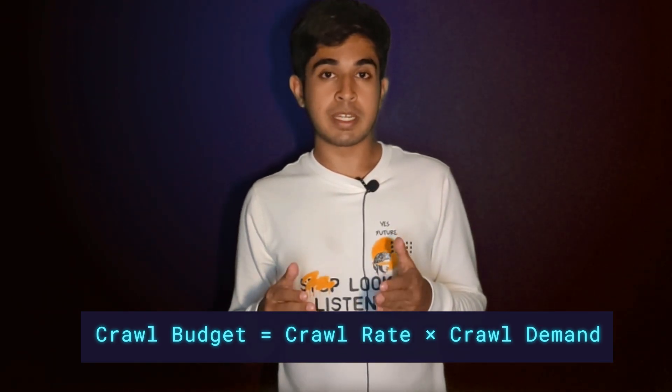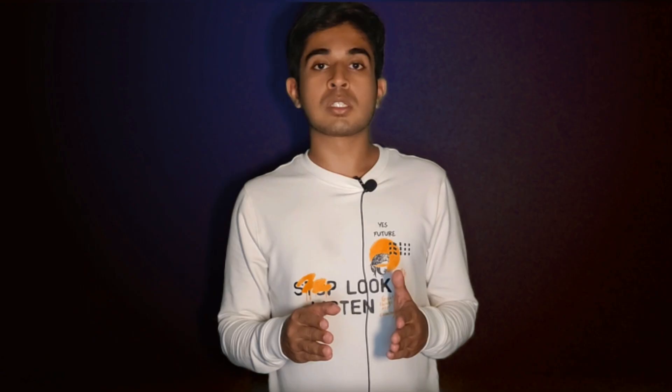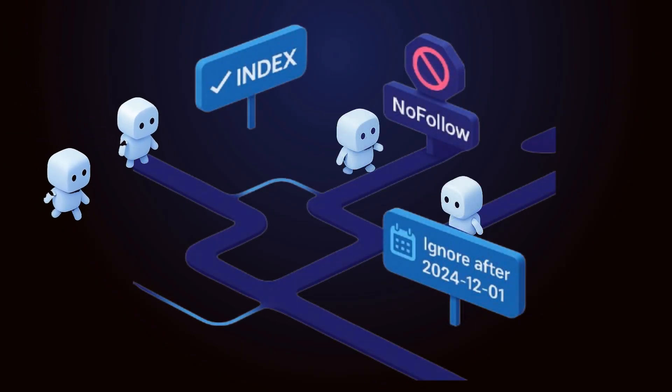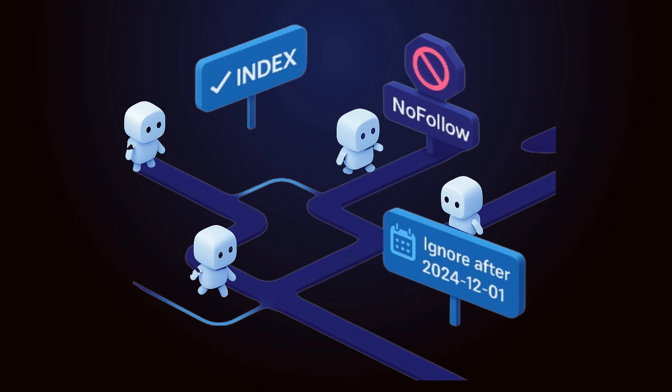Your page's visibility depends on crawl budget. Crawl efficiency is critical — that's where tools like robots.txt and meta directives come in. Directives are rules and instructions for bots: index this, don't follow that link, ignore this page after a date. Used well, they help bots focus on what matters and skip what doesn't.